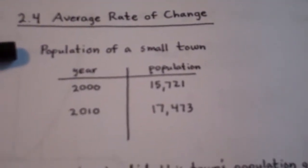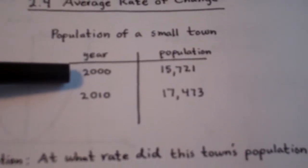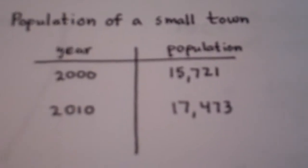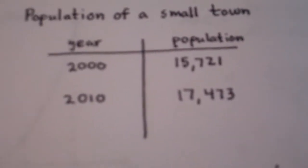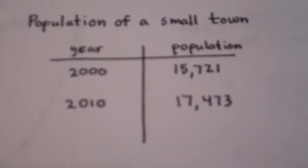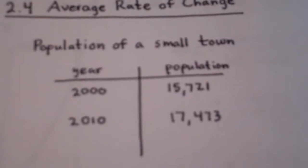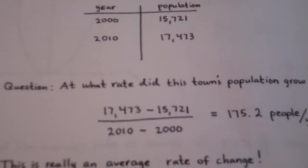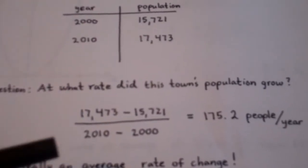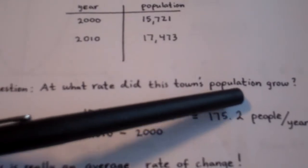Let's look at the population of a small town. Suppose that in the year 2000, the population of the town was 15,721, and in the year 2010, the population was 17,473. At what rate did this town's population grow?